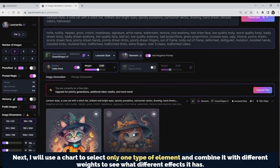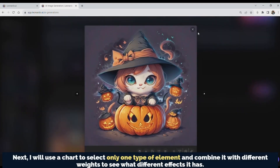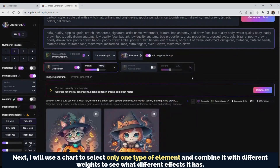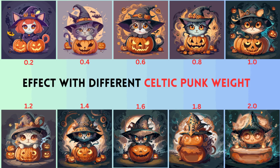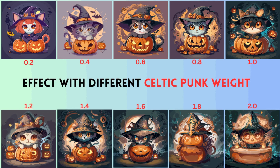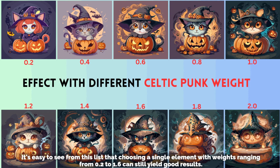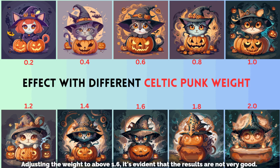Next, I will use a chart to select only one type of element and combine it with different weights to see what different effects it has. The element I'm using here is Celtic Punk. It's easy to see from this list that choosing a single element with weights ranging from 0.2 to 1.6 can still yield good results. Adjusting the weight to above 1.6, it's evident that the results are not very good.